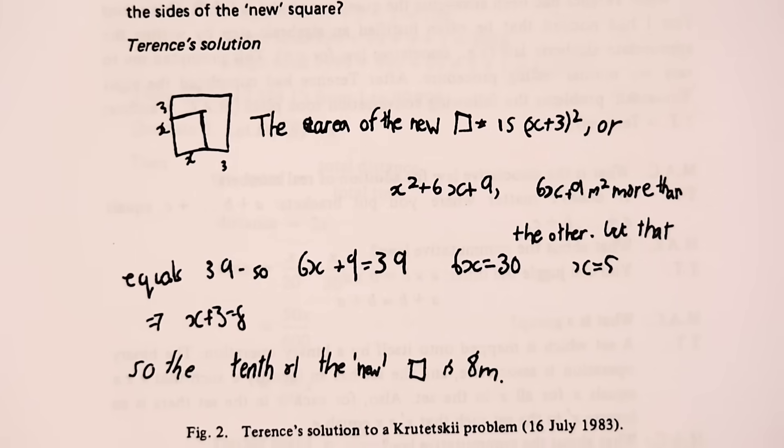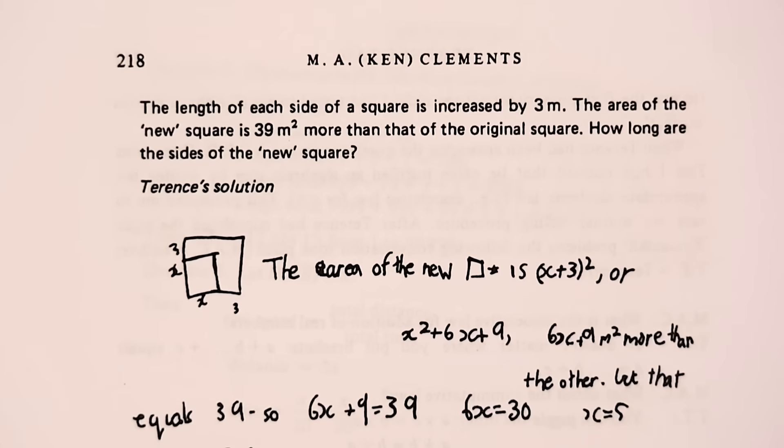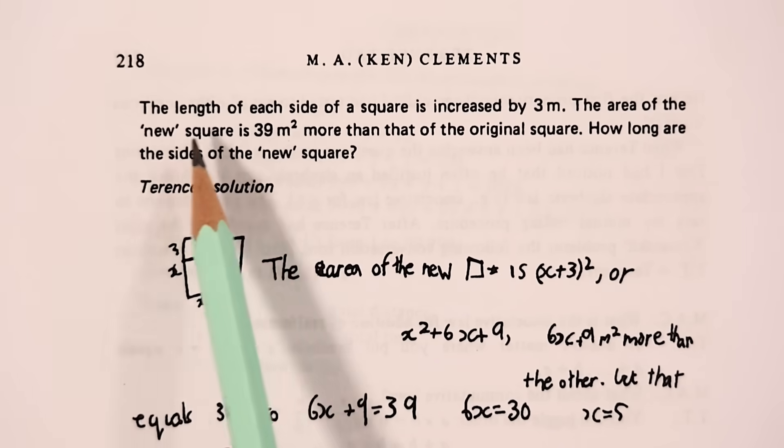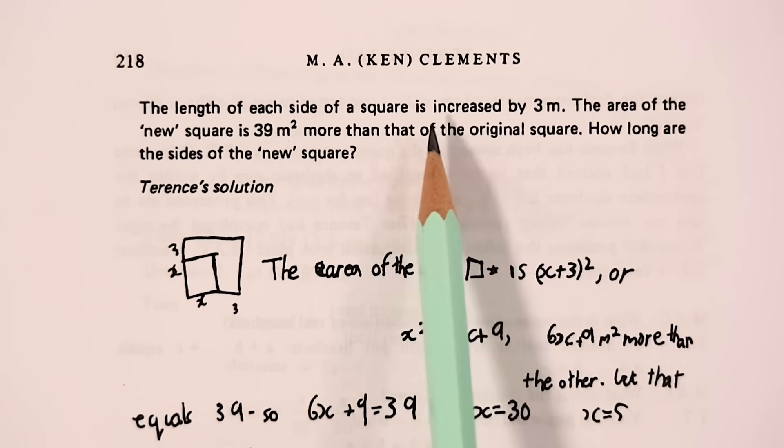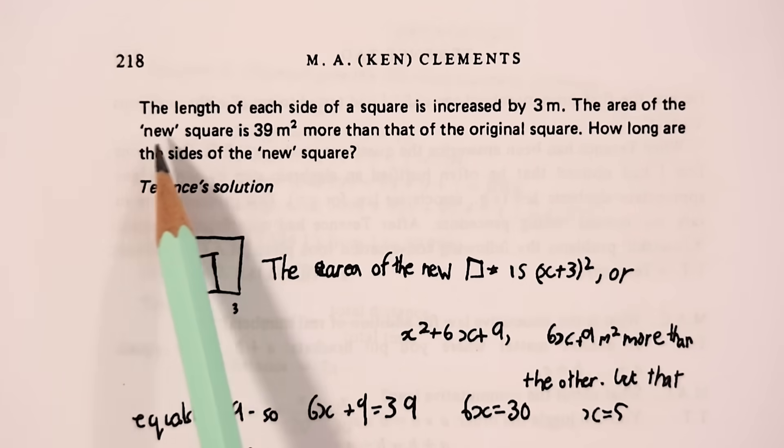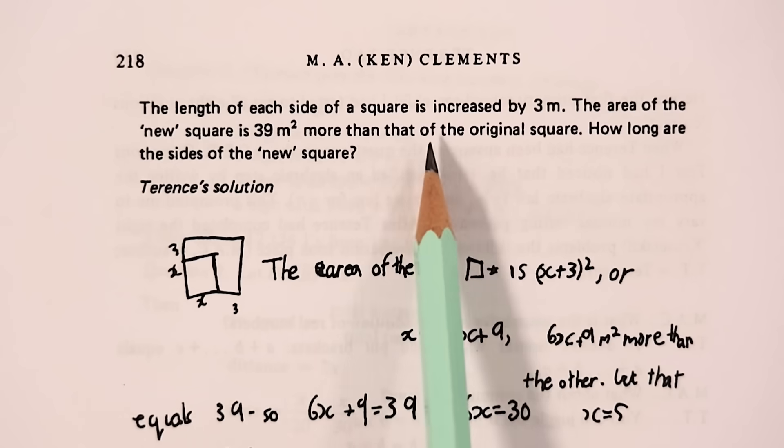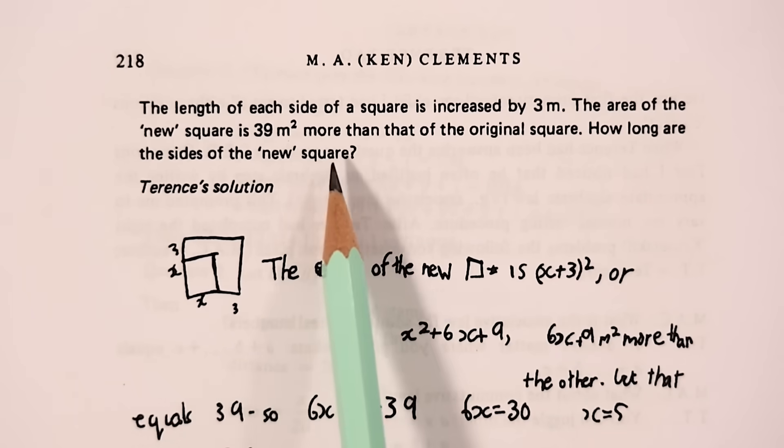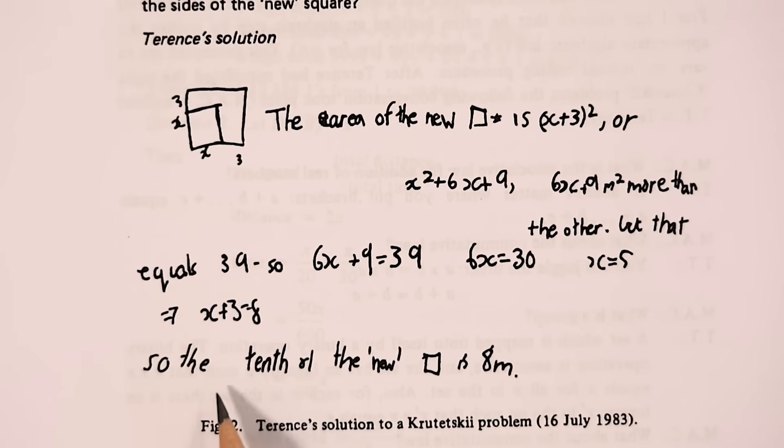Here's one of Terence's actual written solutions to a question that says, the length of each side of a square is increased by three meters. The area of the new square is 39 meters squared more than that of the original square. How long are the sides of the new square? Terence correctly finds that the length of the new square is eight meters.